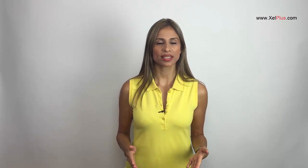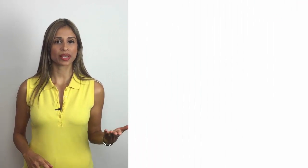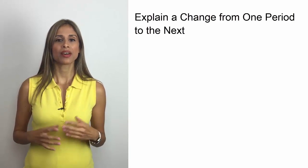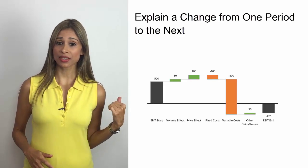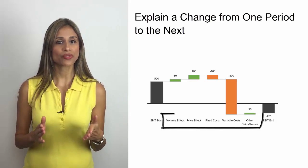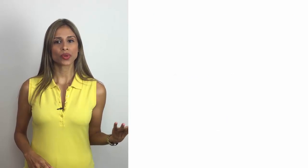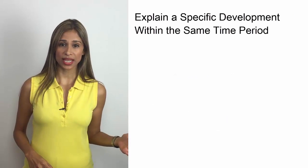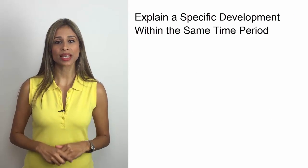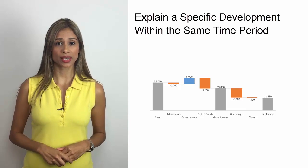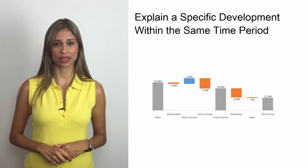For which cases is the waterfall chart good for? Well, for two cases. One is that you need to explain a change that occurred from one time period to another — for example, how did the earnings change from last year to this year and which factors were responsible for this change? And two, you want to explain how you got from point A to point B within the same time period — for example, how you went from gross sales to net income in the same month.